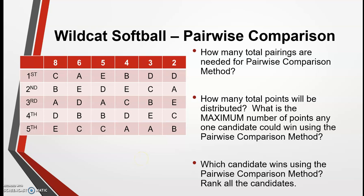Let's look at some additional examples using pairwise comparison and then wrap up our thoughts on pairwise comparison and our voting methods in general. Let's go back to the Wildcat softball example. We want to know how many total pairings are needed for the pairwise comparison method. Remember that asking for total pairings and asking for total points is the same thing — we use n times (n minus 1) divided by 2 for both.